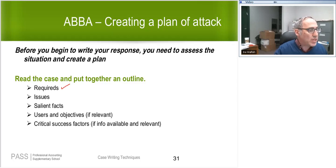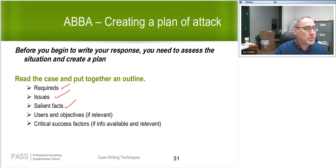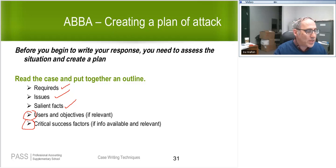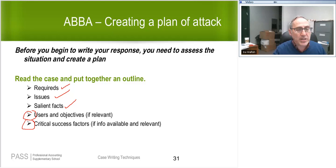As you do the outline, remember to put down the required and leave space between each required, then insert the issues underneath. Keep track of the salient facts — the important facts — by either putting them on your outline or making maximum use of cross-referencing. Users and objectives and critical success factors are not relevant in the vast majority of cases, so only include them if you think they apply here.